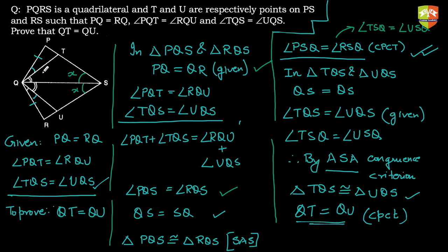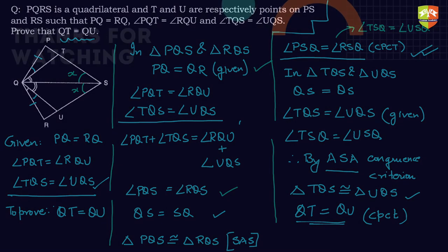In this particular problem, we had two pairs of triangles which were congruent, and that helped us prove the required relationship. I hope you understood this problem.